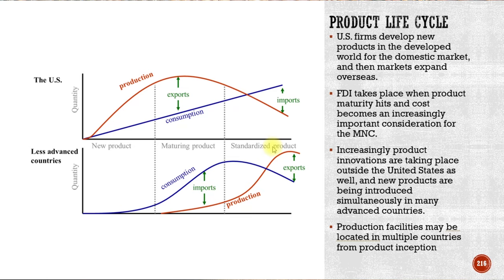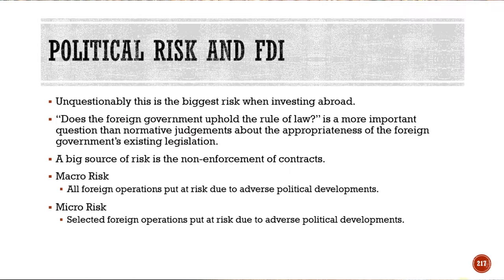For a new product you typically have domestic production, and as it matures and becomes standardized you move it to a foreign country. For less advanced countries, in the beginning they would have to import certain technology — things like cell phones and computers in earlier days. But today many of those products are very streamlined and mature, allowing production in less advanced countries, which means they can now export it because it's standardized and easy to build.